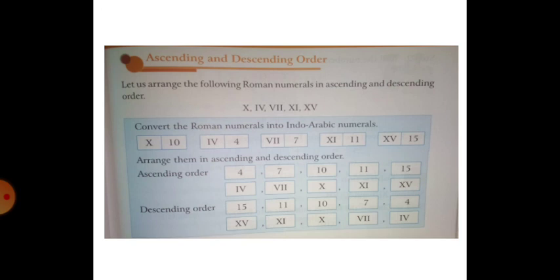Next is ascending and descending order. Let us arrange the following Roman Numerals in ascending and descending order. Ascending order means from the smaller number to the larger number; descending order means from the larger number to the smaller number. First, convert the Roman Numerals into Indo-Arabic numerals, arrange them, then write back the Roman Numerals.